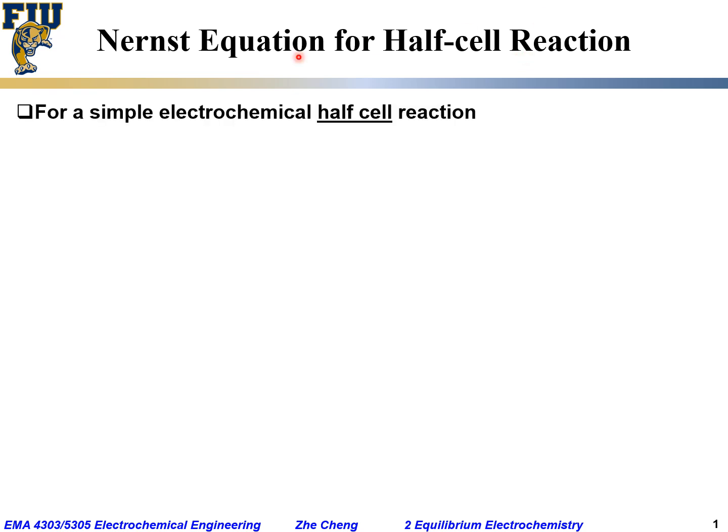For a simple electrochemical half-cell reaction, if we write it like this: Ox, meaning oxidized species, plus n number of electrons to form Red for reduced species. If a half-cell reaction can be written in this way, then the Nernst equation can take a specific form.